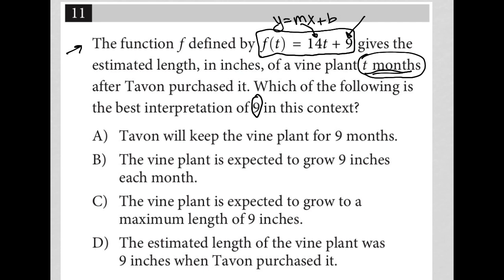So we know that m is like our 14. So that's our 14 inches per month, basically, is what that 14 represents. And b, or the y-intercept, is where the 9 is, which should make the 9 mean that the length of the vine plant was 9 inches at the time that Tavon purchased it. So at time zero, basically.